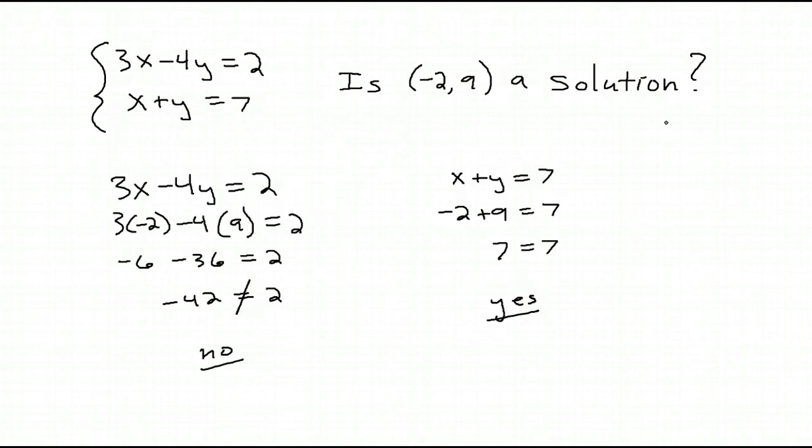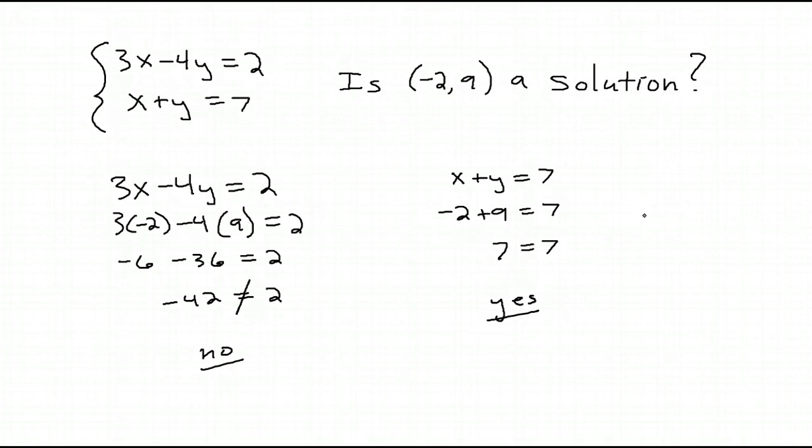Let's see. When I put the point negative 2 comma 9 into both equations, it gives me a true result in the second equation, but the first equation, that is not true. So the answer is no, because in order to be a solution, it has to make both equations true.